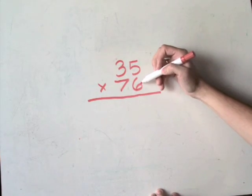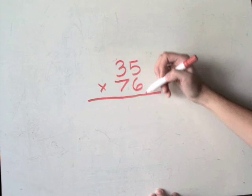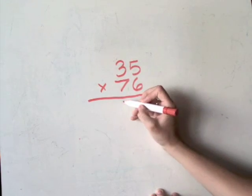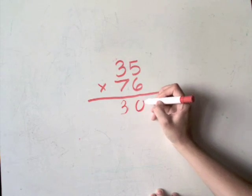In this method, 6 times 5, obviously still 30, but instead of putting one digit down here and the other one up here, you're going to go ahead and write the whole number here, 30.